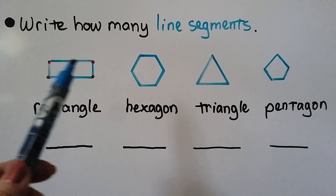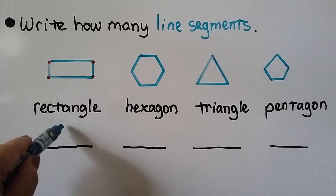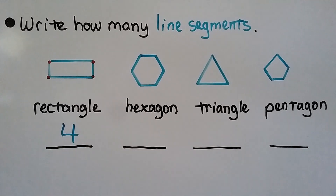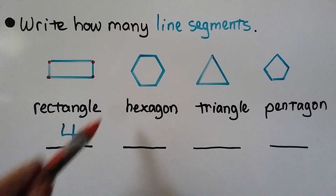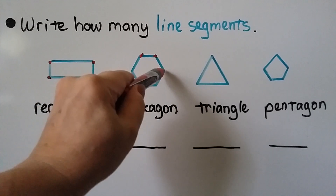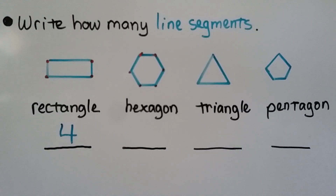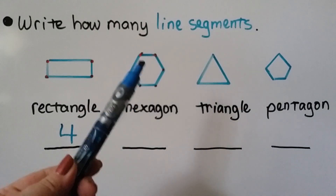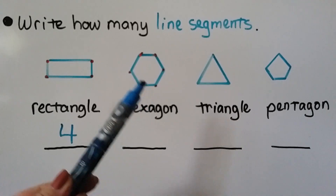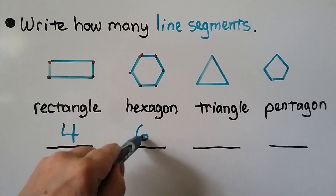Now it's a closed shape. A rectangle has four sides. What about this hexagon — how many line segments does it have? We can put an endpoint at each corner and count the line segments: one, two, three, four, five, six. A hexagon has six sides.